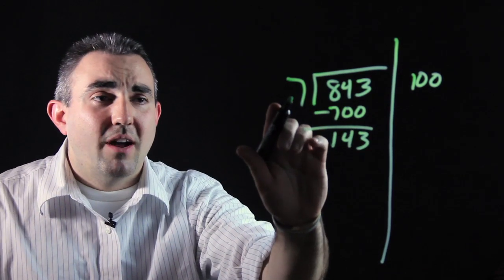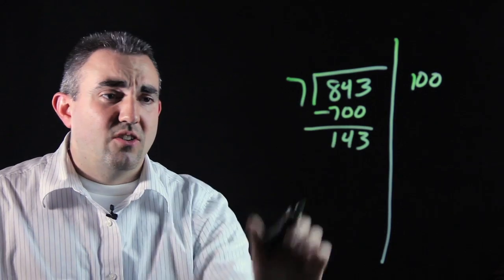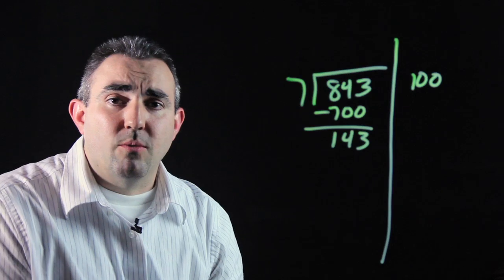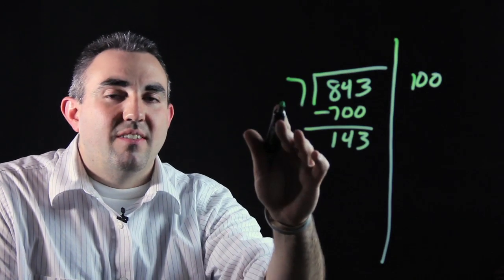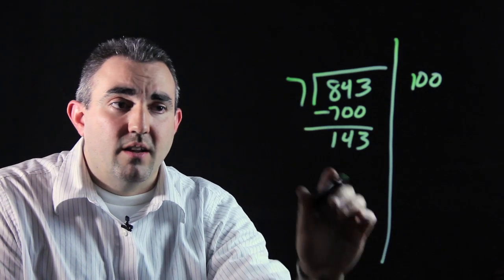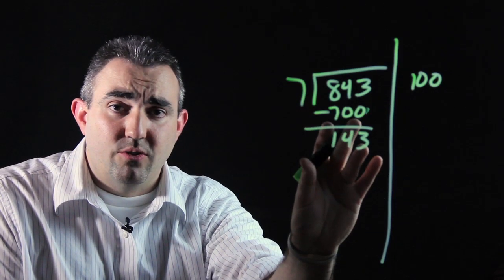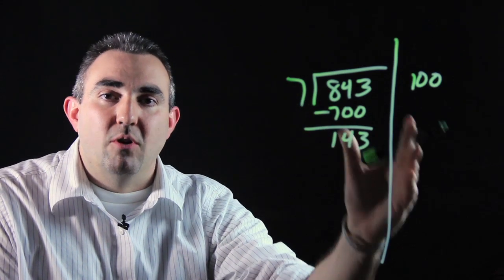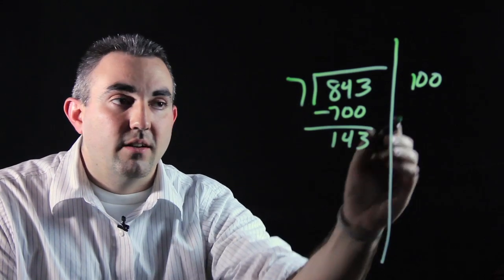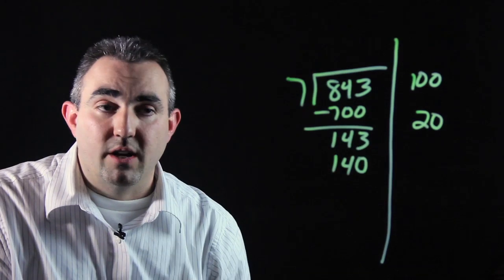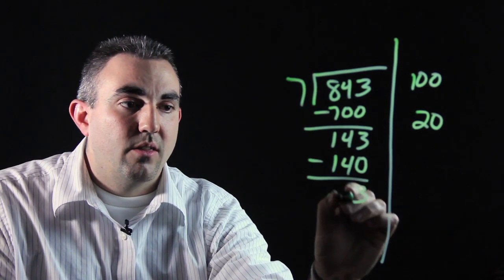Now, if you multiply 7 times 100 again, you're going to get 700 down here, which is way too big. So now you need to go to your multiples of 10. 7 times 10 is 70. 7 times 20 is 140, which is very close to 143. So instead of using 7 times 10, you want to use the next multiple of 10, which is 7 times 20. So we're going to multiply 7 times 20 and get 140. Subtract 3.